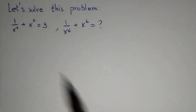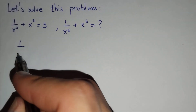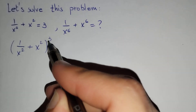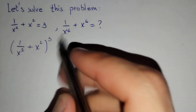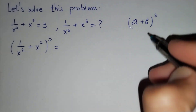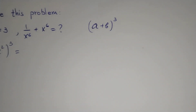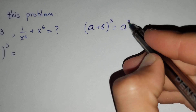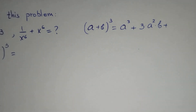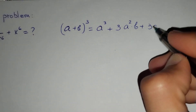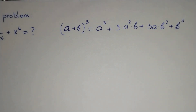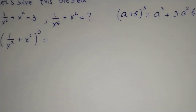Firstly, if we raise 1 over x squared plus x squared to the third degree, we know that (a + b) to the power 3 equals a cubed plus 3 times a squared times b plus 3 times a times b squared plus b cubed. And for this formula we may find this.